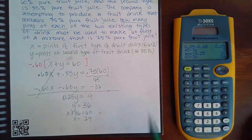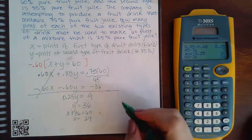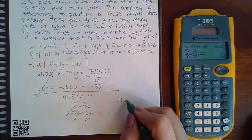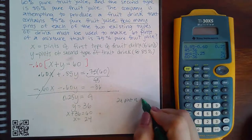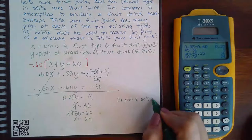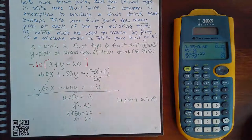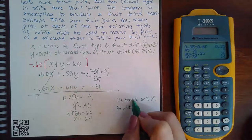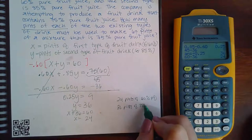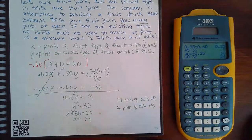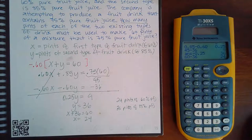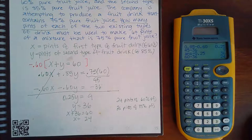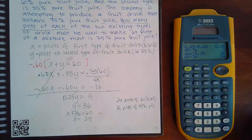So I know exactly how many pints of each type to use. I need 24 pints of the 60 percent pure fruit juice drink, and then I need 36 pints of the 85 percent pure fruit juice drink. That will give me the 60 pints total of a drink that is 75 percent pure fruit juice.